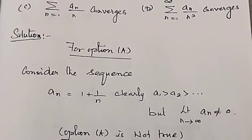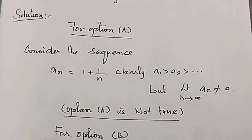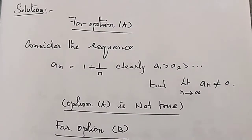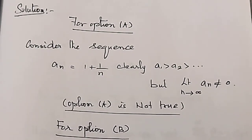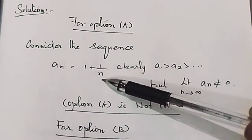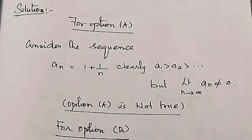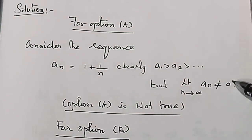Consider the sequence where a1 greater than a2 greater than a2 greater than... You can see a_n equal to 1 plus 1/n. Clearly a1 greater than a2 greater than ... and the limit as n tends to infinity of a_n is 0. But what is the option? The limit tends to 0, so option A is not true.